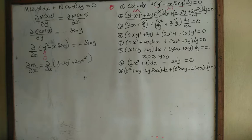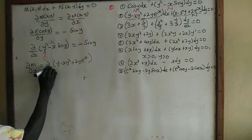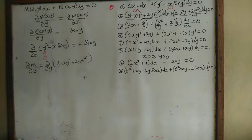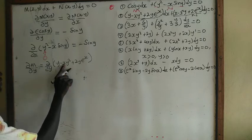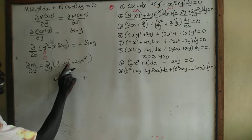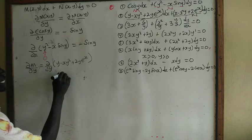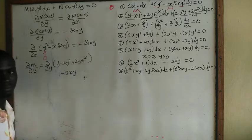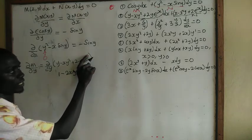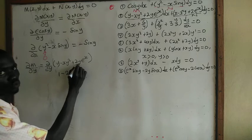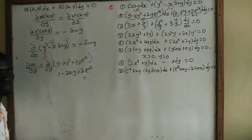For the second question, we use this as our M and this as our N. Del M with respect to del y equals del/del y of the bracket y minus xy squared plus 2y e to the power x. Holding x as a constant, differentiating y gives 1, differentiating y squared gives 2y multiplied by the constant x to get negative 2xy, and differentiating 2y gives 2. So we get 1 minus 2xy plus 2e to the power x.